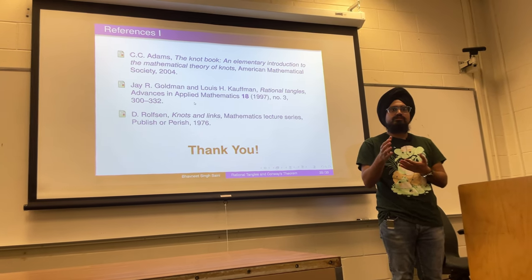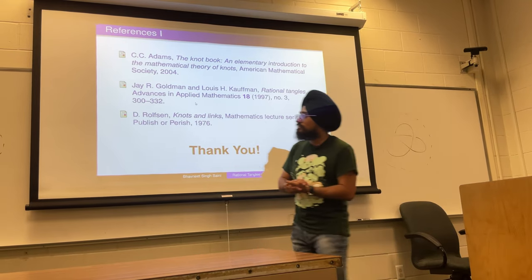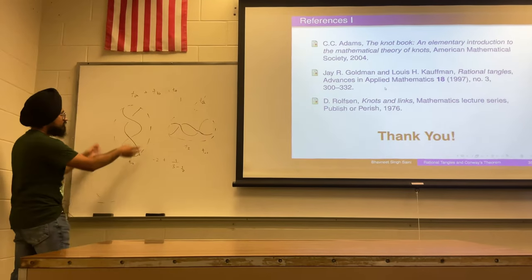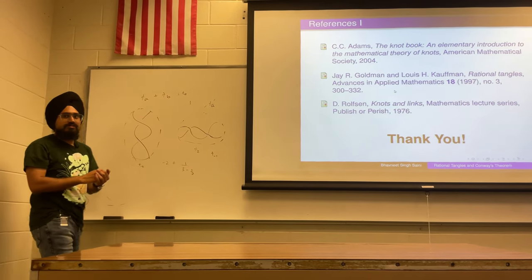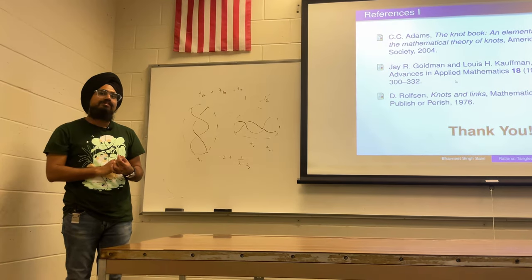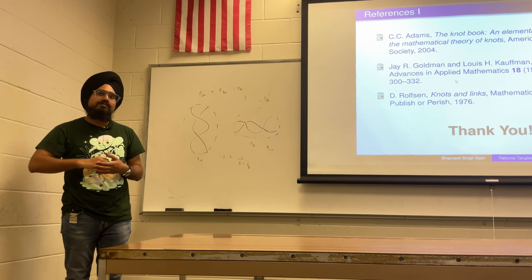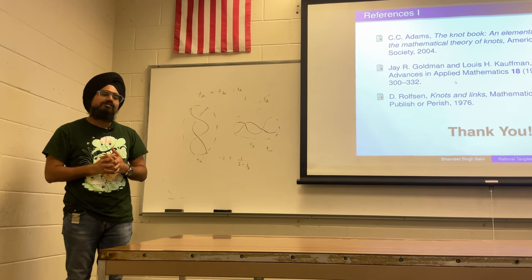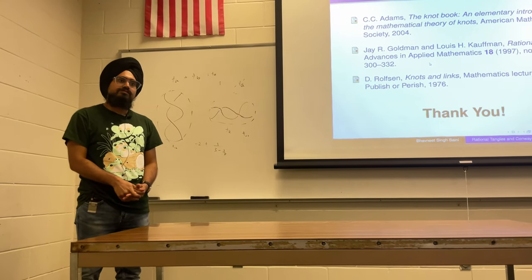Up to seven-crossing knots, all of them are actually rational knots. Given a tangle, you can remove the tangle box and join the two strings up and down to get a knot. In fact, every knot can be represented by a tangle box in a very specific, nice way.